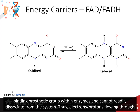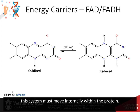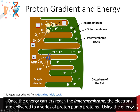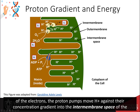NADPH is very similar to NADH but contains an extra phosphate group. Once the energy carriers reach the inner membrane, the electrons are delivered to a series of proton pump proteins. Using the energy of the electrons, the proton pumps move protons against their concentration gradient into the intermembrane space of the mitochondria.